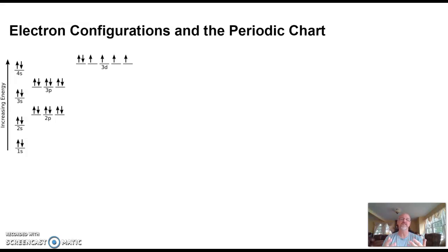When we get to the d orbitals, we have five different degenerate orbitals, so that means there's room for ten electrons. With the f orbitals, we have fourteen because there's seven different orbital spots for fourteen electrons.